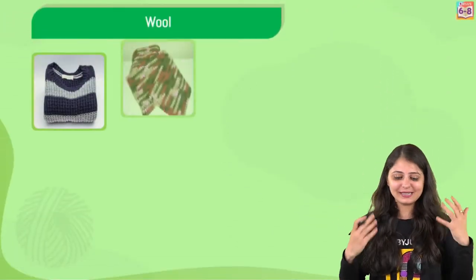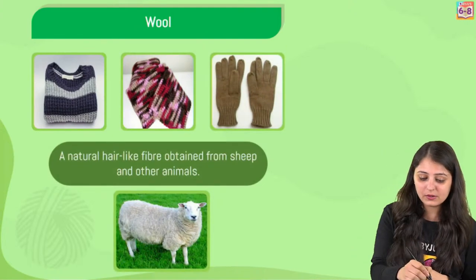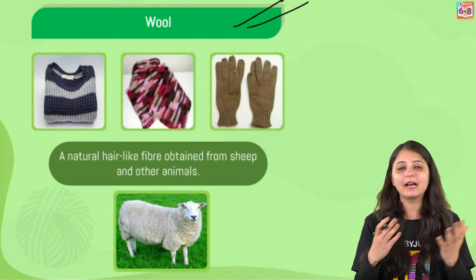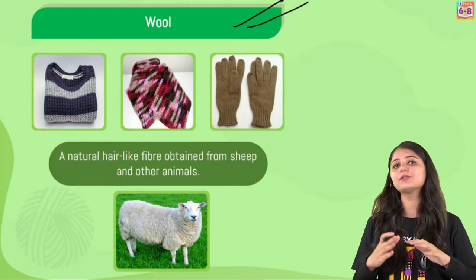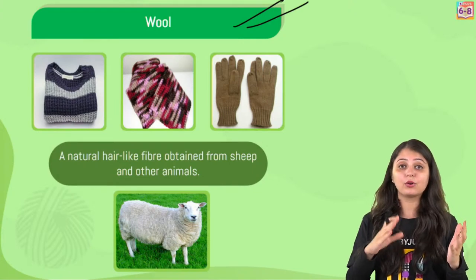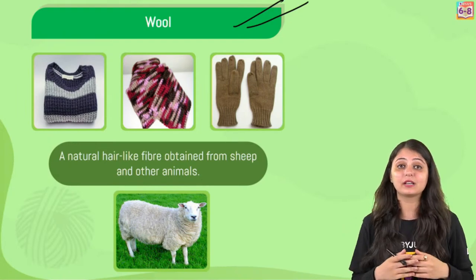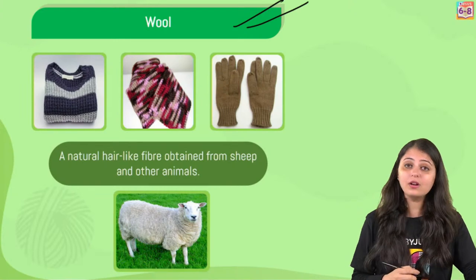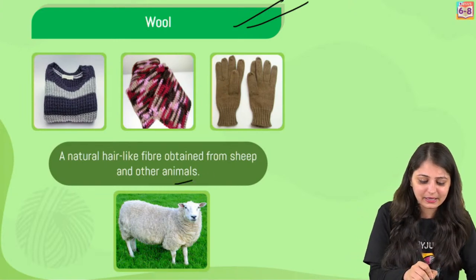Let's start with wool. Sources of natural fibers can be plant-based or animal-based. We've discussed these - in grade 6 you came across cotton and jute. Now in grade 7 you're studying about wool and silk. Wool comes from sheep and many other animals, and after a lot of steps they are processed into woolen fabrics.